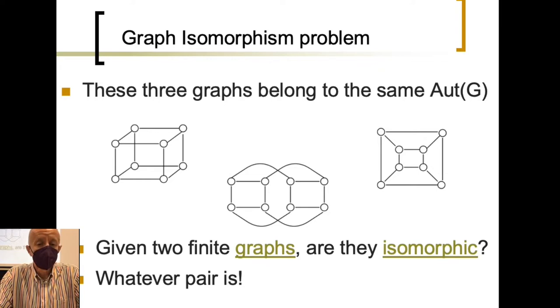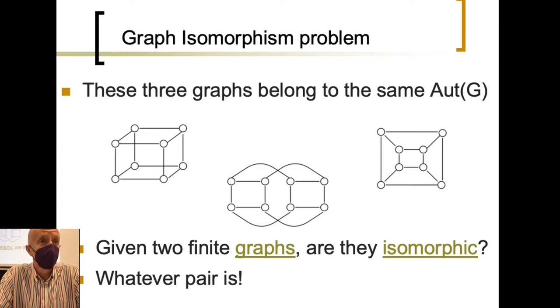The big question to be answered is, given two finite graphs, are they isomorphic? Of course, in the examples we are seeing on the screen, whatever pairs are isomorphic.